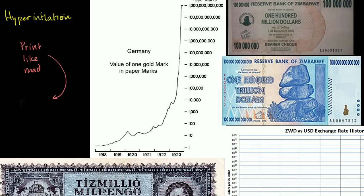Printing like mad leads to prices going up. And then because prices go up, they have to print more in order to be able to get the same goods and services, or pay the government workers what they wanted to pay them, or pay the soldiers. And this by itself would probably drive the hyperinflation in and of itself.